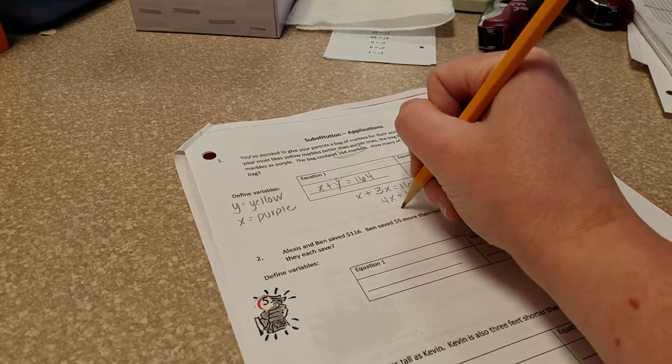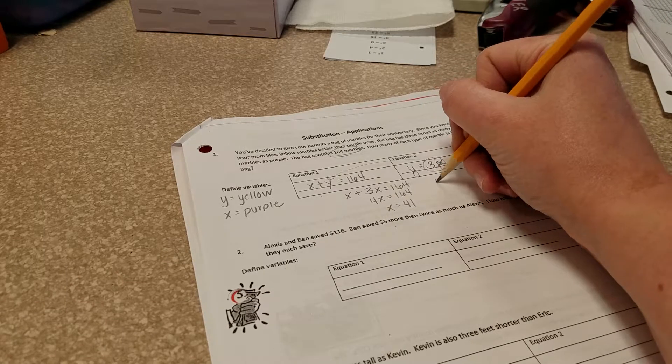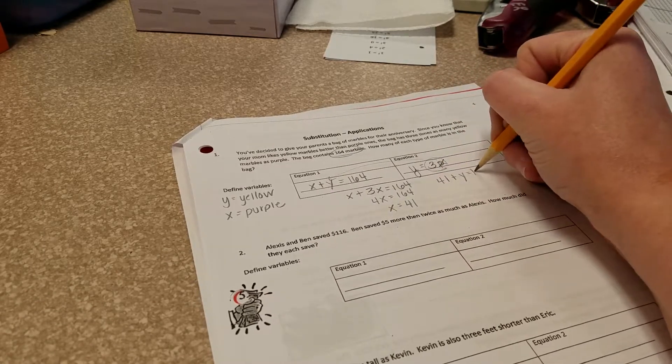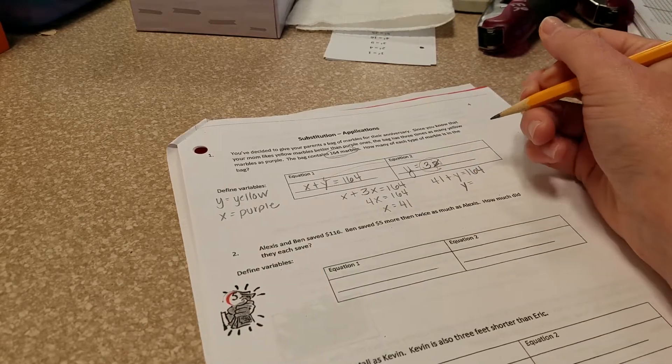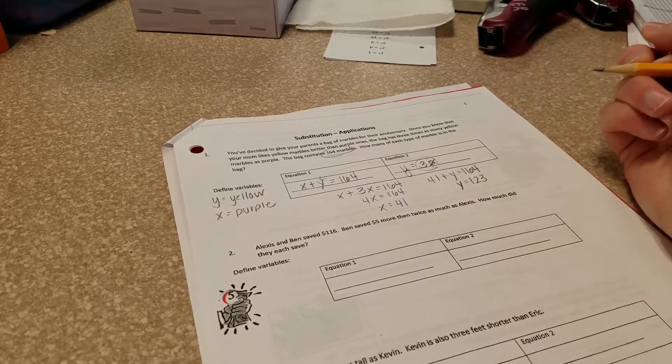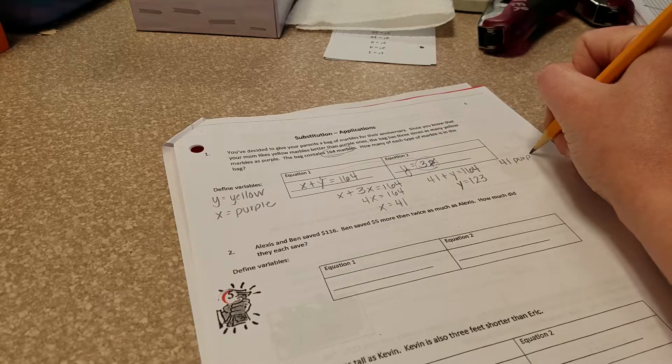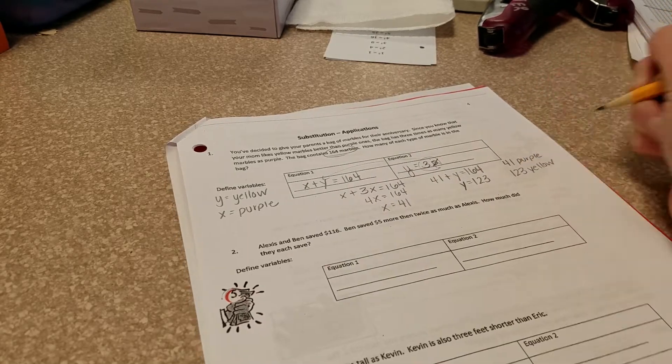So X is going to equal 41 marbles. So if we have 41 are purple plus Y is going to equal 164 marbles, our yellow marbles are actually going to equal 123. So we'll have 41 purple and 123 yellow marbles.